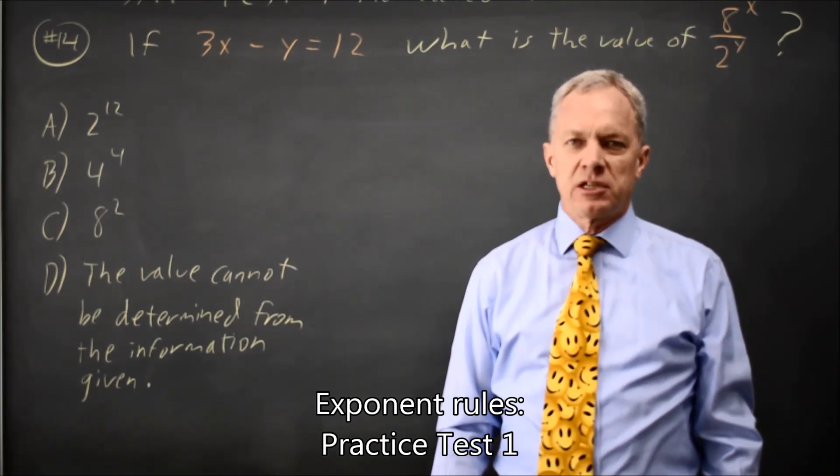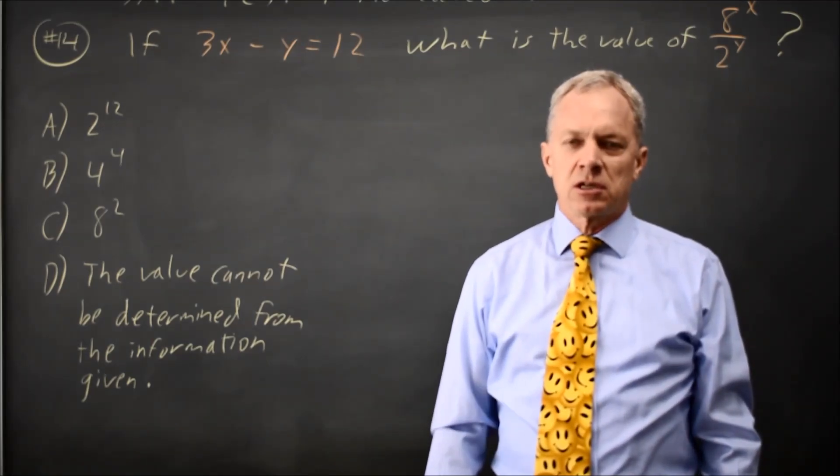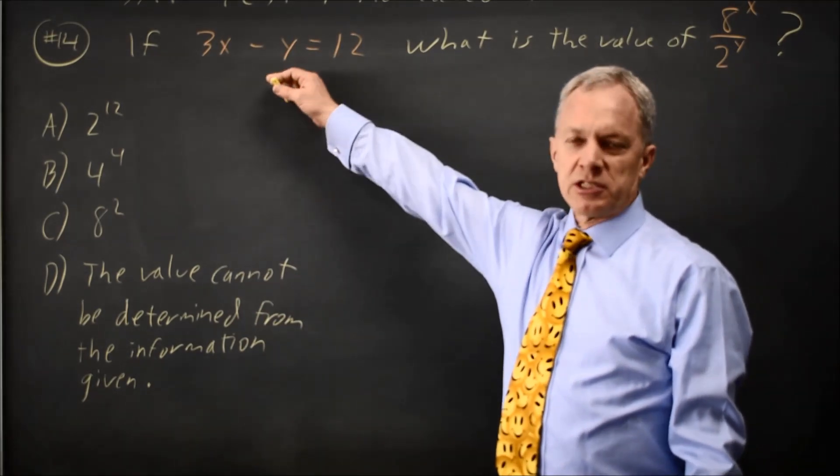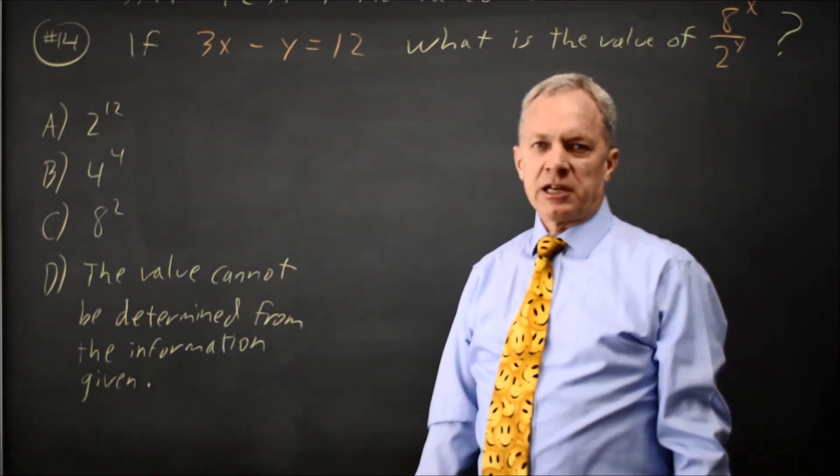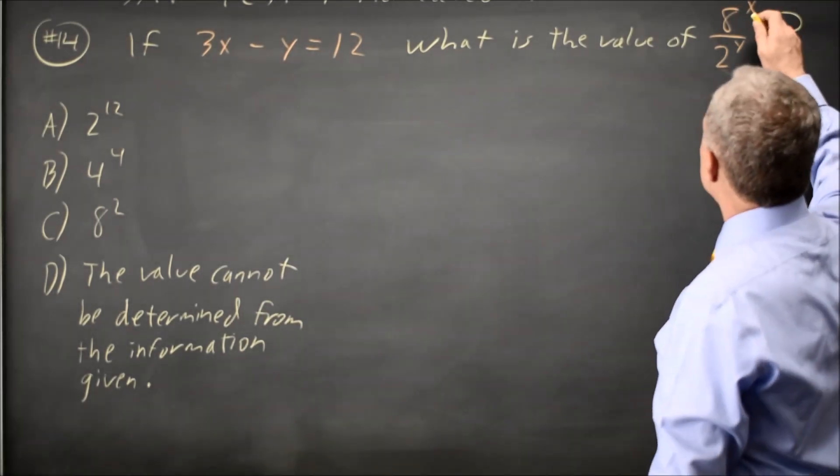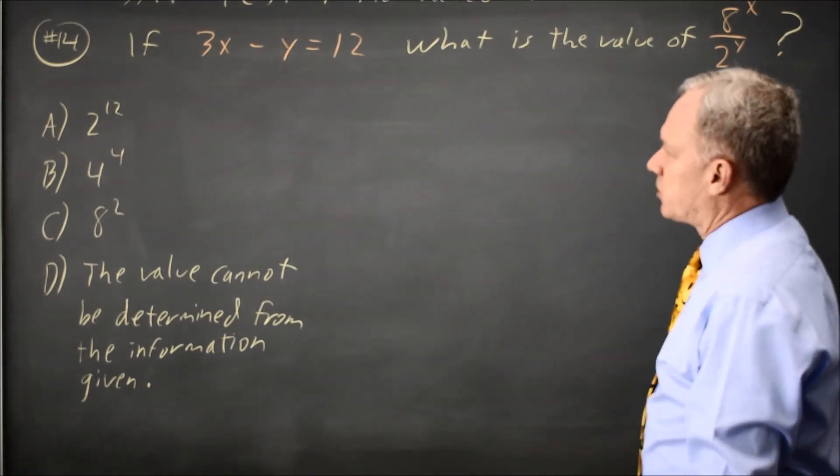This is non-calculator question 14 from SAT Practice Test 1. College Board gives us a linear equation, 3x minus y equals 12, and asks us to evaluate the ratio 8 to the x over 2 to the y.